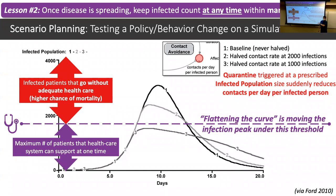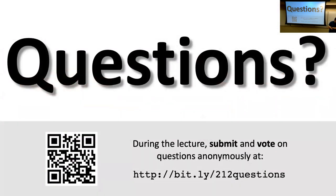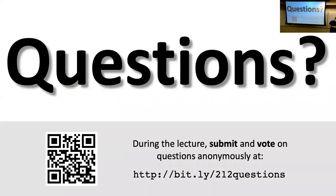It's not about predicting what's happening — it's about scenario planning so we can wrap our heads around what the right policy is. Should we quarantine, and if we do, what outcome should we expect? That's the kind of question this model helps us answer.